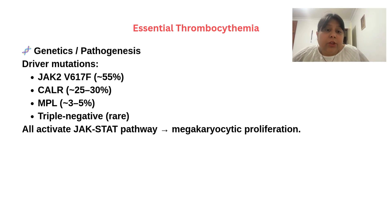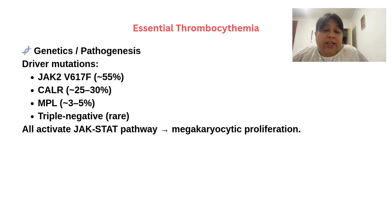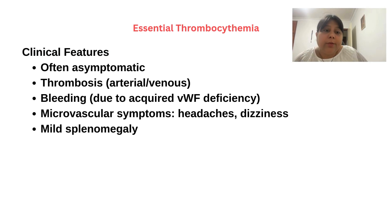Now let's talk about the genetics and pathogenesis of essential thrombocytemia. There are some driver mutations: JAK2 mutation is the most common, others are the CALR mutations and the MPL mutations, and sometimes there is no mutation — it's triple negative. All these cause activation of the JAK-STAT pathway, which causes megakaryocytic proliferation.